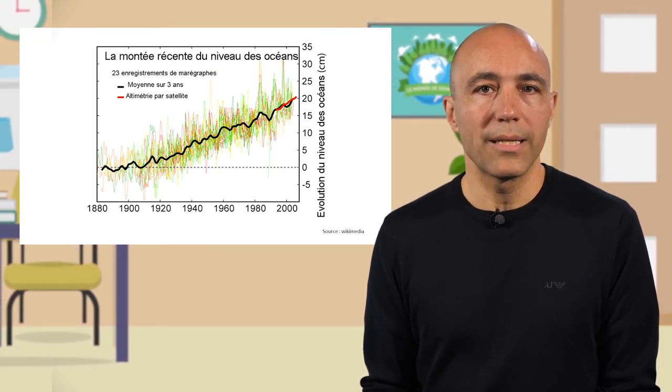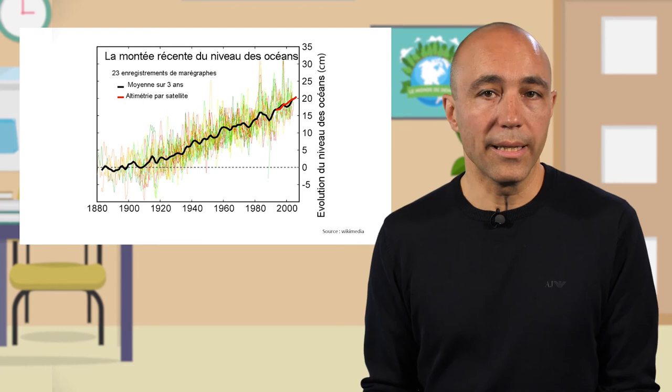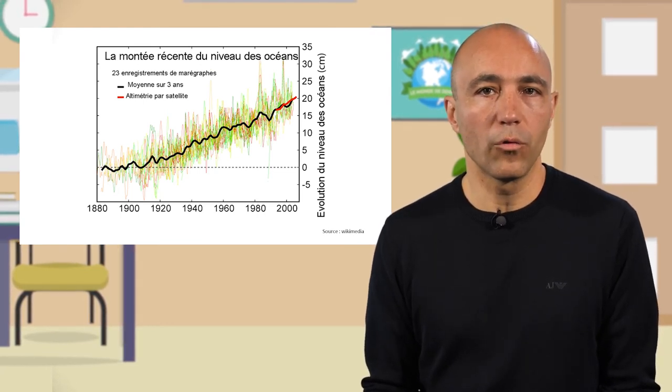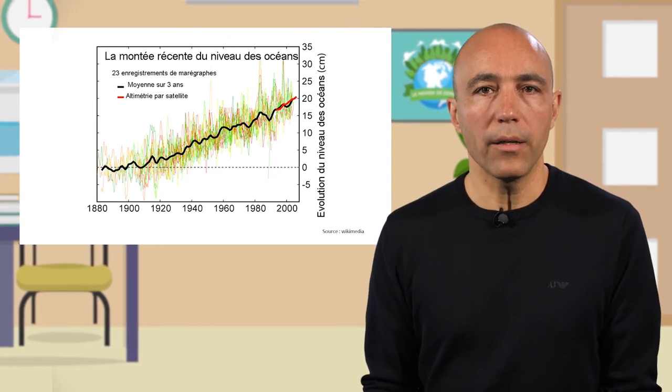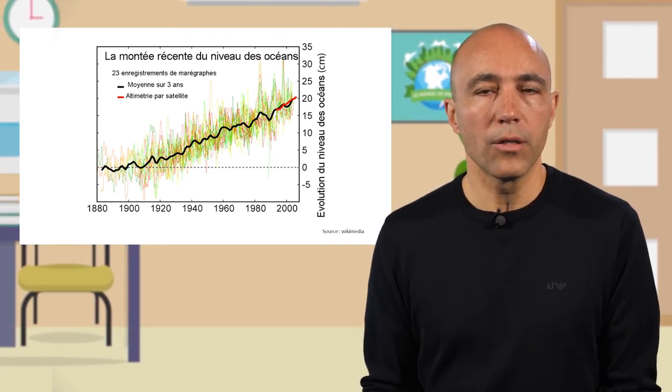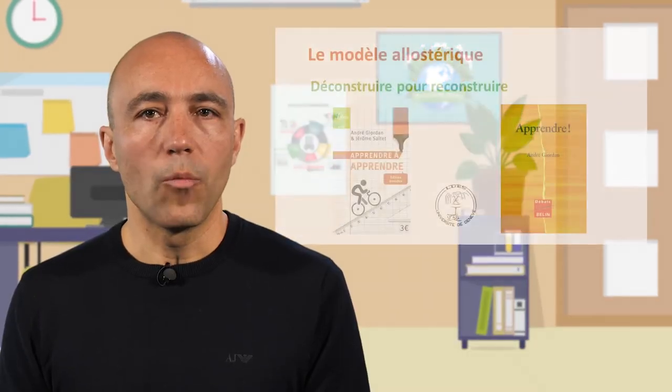Et plus encore, lorsque l'acquisition de nombreuses notions entremêlées est nécessaire, comme c'est justement le cas pour comprendre la fonte des glaces polaires, seules des pédagogies promouvant la création de liens et une vision systémique des phénomènes sont pertinentes. Pour décrire ces cas d'apprentissage complexes, un modèle dit allostérique a été développé par André Jordan à l'Université de Genève durant les 30 dernières années.